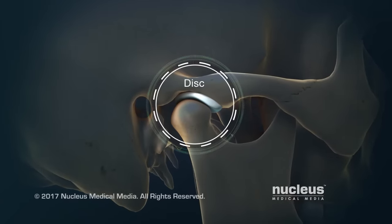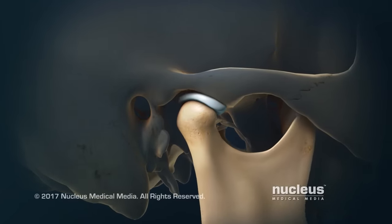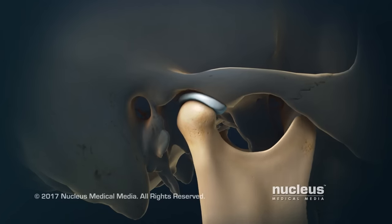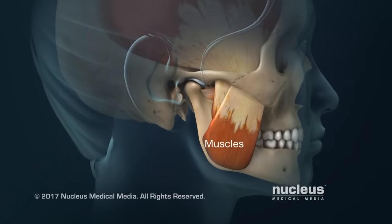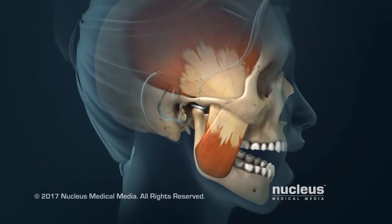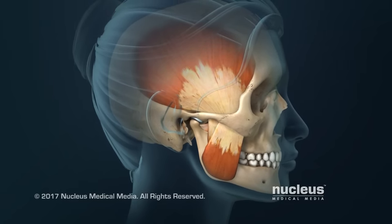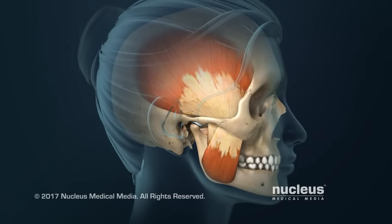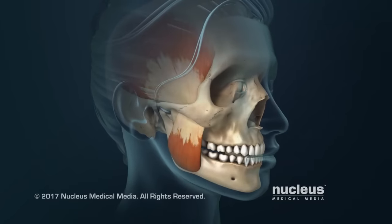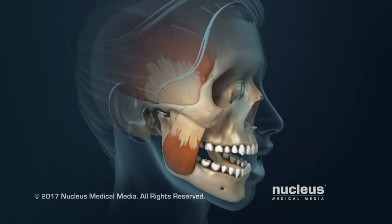A soft cushion, called a disc, sits between the bones. The rounded ends of the mandible and the discs slide forward when you open your mouth, and slide back in place as you close your mouth. Muscles are attached to the mandible and control its movement. The joint can open and close like a hinge, but unlike many other joints, the TMJ can also slide forward and backward and side-to-side. Because of this sliding ability, the joint needs your jaw muscles and teeth to help guide it into proper position when you open and close your mouth.